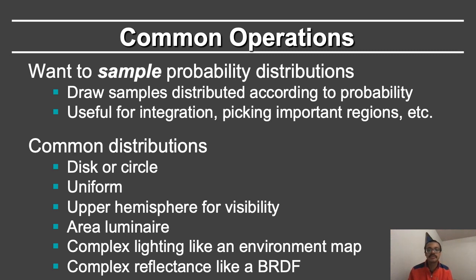Common distributions that we want to sample from are a disk or a circle, a uniform probability distribution, the upper hemisphere for integrating direct lighting or for visibility, an area light source and an area luminaire. We want to sample complex lighting such as an environment map. I wrote a paper about this nearly 20 years ago. Or we want to sample complex reflectance like a BRDF.